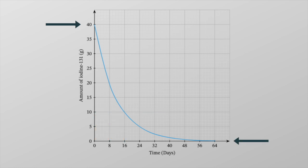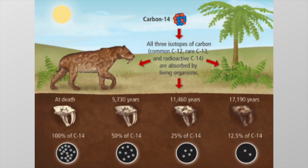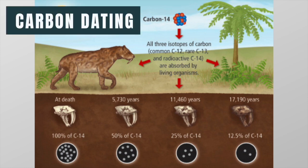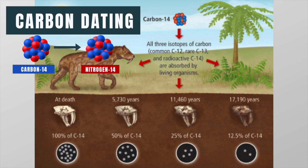Note that this process continues, and although the amount of iodine might get very small, it does not drop to zero completely. Archaeologists use half-life to date the age of organic objects in a process known as carbon dating. During beta decay, carbon-14 becomes nitrogen-14. At the time of death, organisms stop producing carbon-14. Scientists know the half-life of carbon, so they can figure out how long ago the organism died.